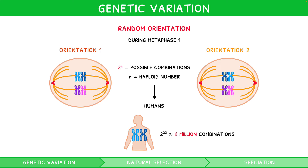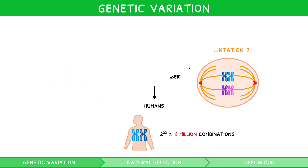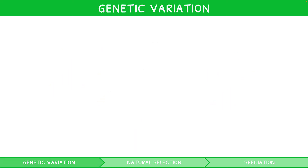Hopefully, you can now appreciate the true complexity of meiosis with regards to genetic variation, as is expected for the IB Biology higher-level syllabus. Genetic variation is essential for evolution, and thus directly impacts the process of natural selection.